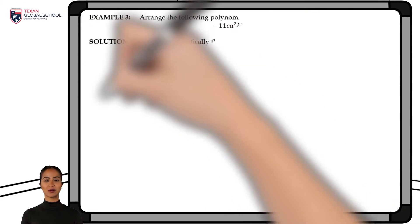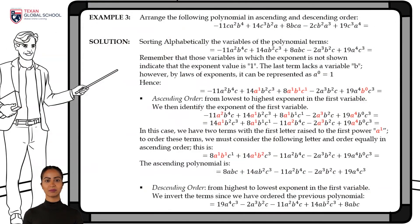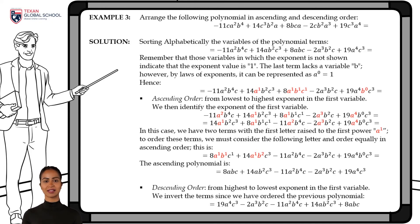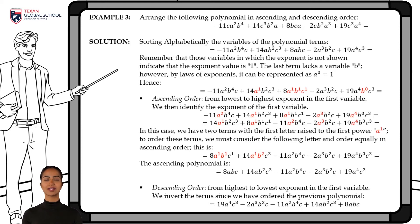In this last example, we will follow the same steps. First, we sort the variables of the terms of the polynomial alphabetically. Variables without an exponent shown are raised to the 1st power, and terms lacking a variable are represented as that variable raised to the 0 power. In this particular case, we can see two terms where the first variable a is raised to the 1st power. To order these terms, we must then consider the next letter b and order equally in ascending order.